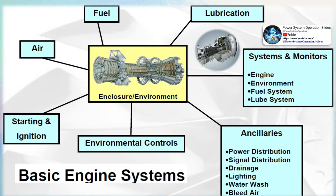Fourth, small gas turbines in the range from about 0.5 to 2.5 megawatts — they often have centrifugal compressors and radial inflow turbines with efficiency of 15 to 25 percent. Fifth, micro turbines in the range from 75 to 650 kilowatts with efficiency of 15 to 20 percent.